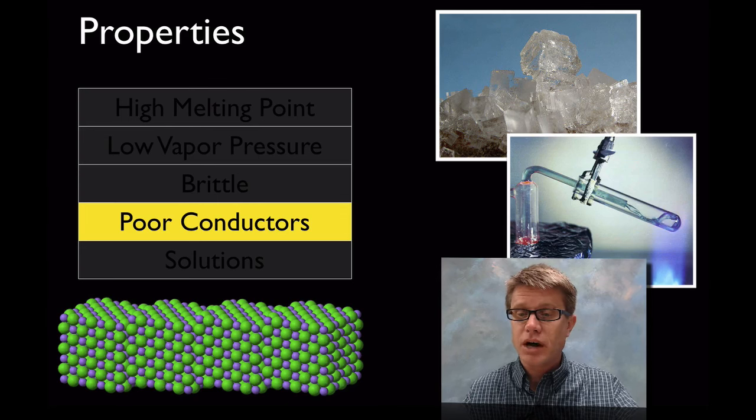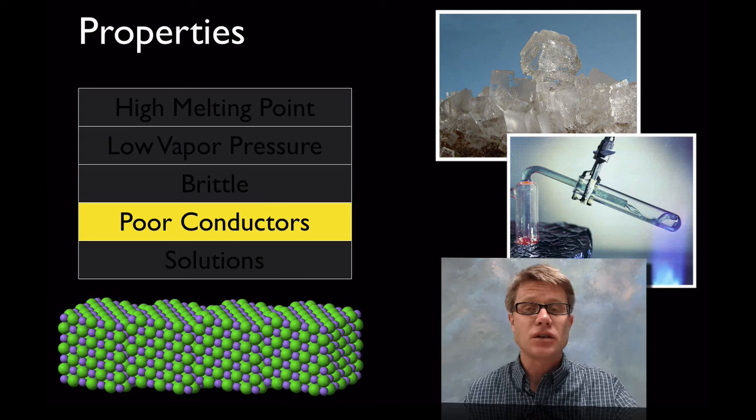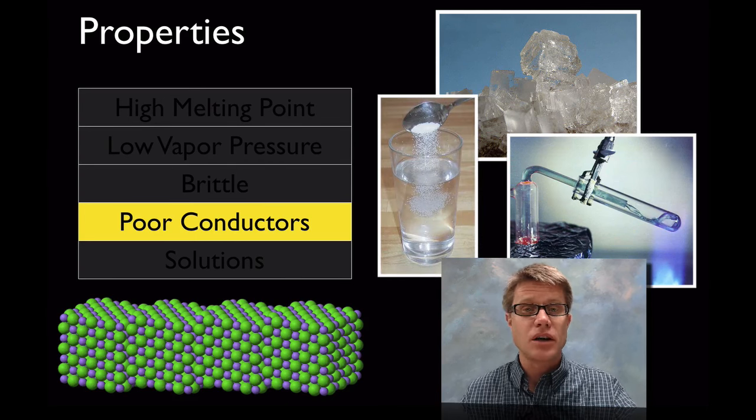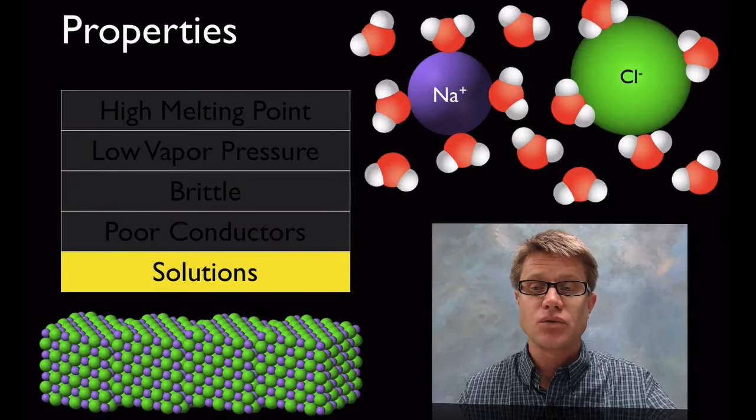However, if we melt it, like this lithium fluoride, beryllium fluoride melted salt, it actually starts to conduct electricity. If we add it to water it's going to quickly break apart and it's going to be an electrolyte. It's going to allow electrons to flow through it as well.